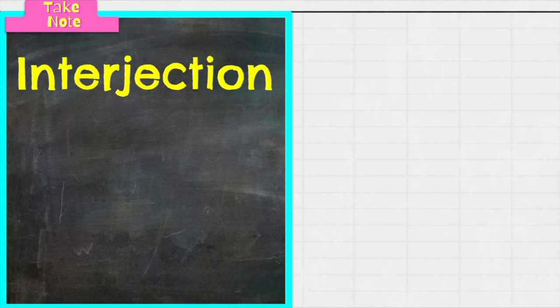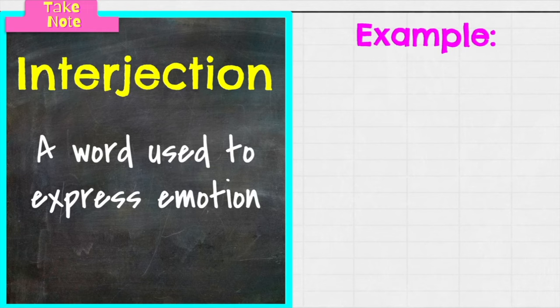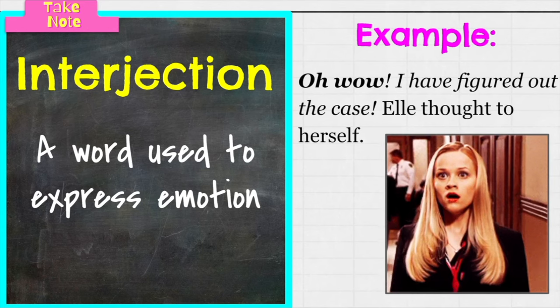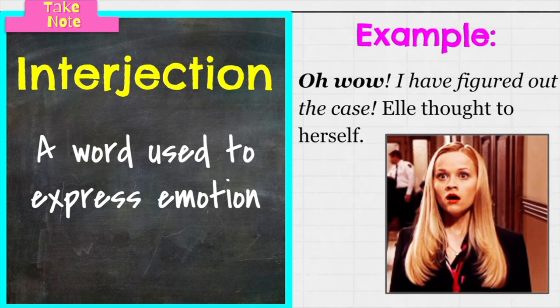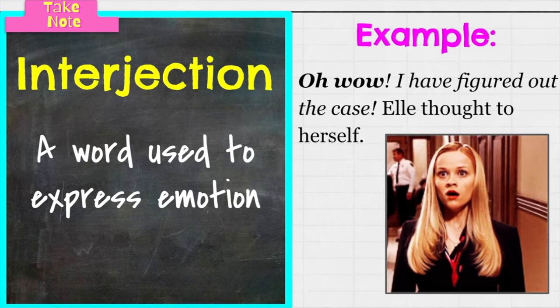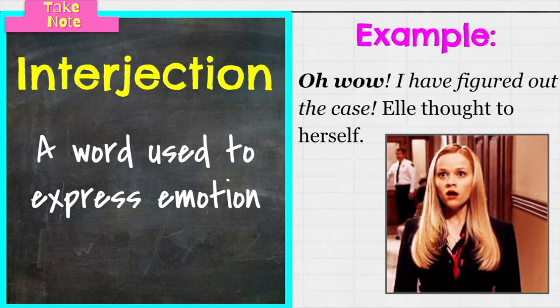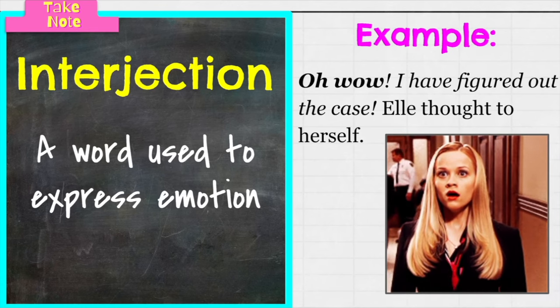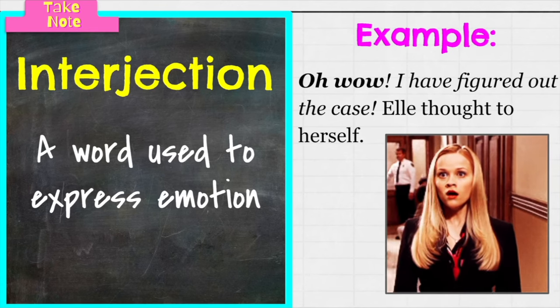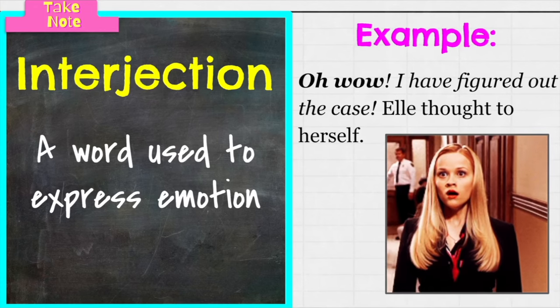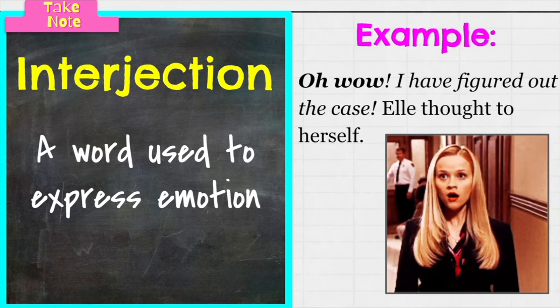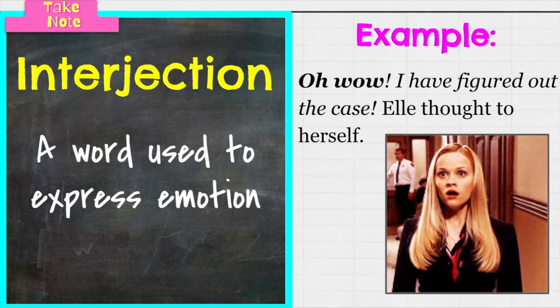Next we have interjections. I love these because they're very excitable words or phrases — words used to express emotion. For example: Oh wow, I have figured out the case! Elle thought to herself. Oh wow would be our interjection. It could be Yay! or Oh my gosh! I always think interjection looks like interruption to me. Anytime you want to interrupt someone with something exciting — Oh my gosh, that's great news! Yay! Congratulations! — those are interjections.